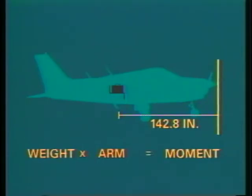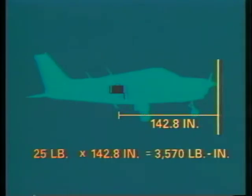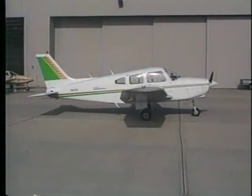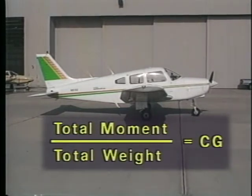For example, the weight of the suitcase is 25 pounds. Multiplying this weight by the arm results in a moment of 3,570 pound-inches. By adding all the moments together and then dividing by the total weight, you'll get the center of gravity for the loaded airplane. It's your responsibility as a pilot to make sure this CG is within limits.